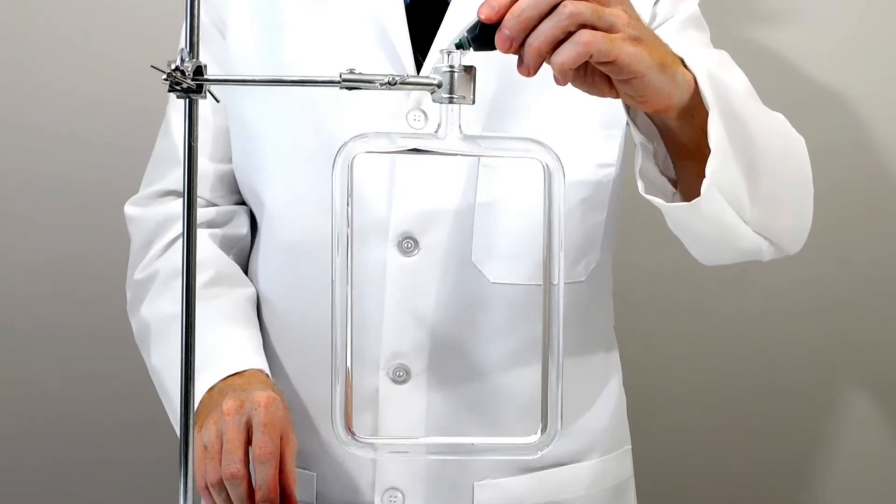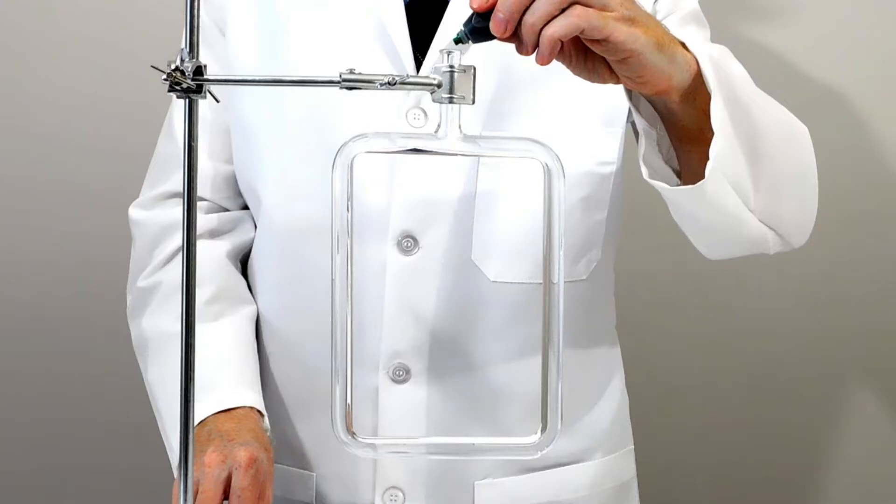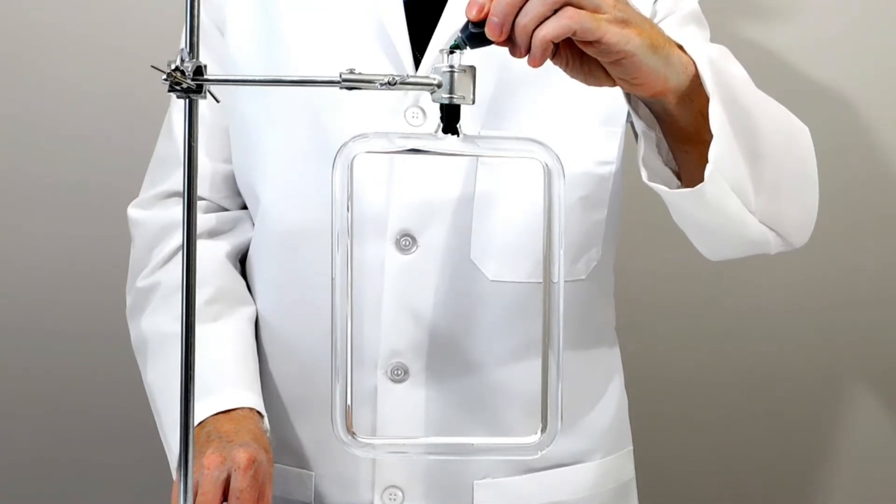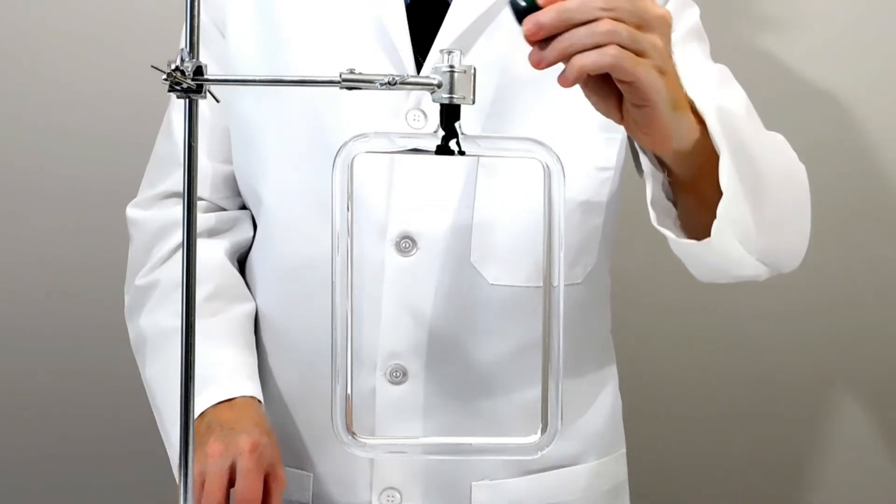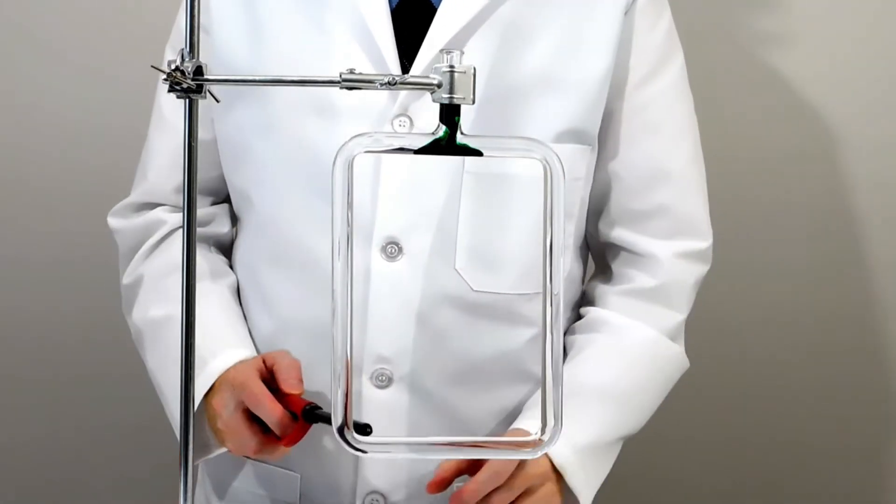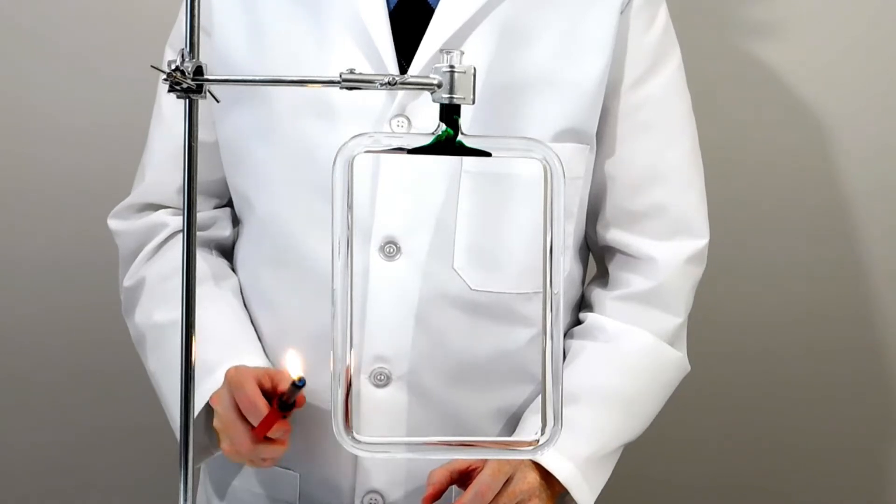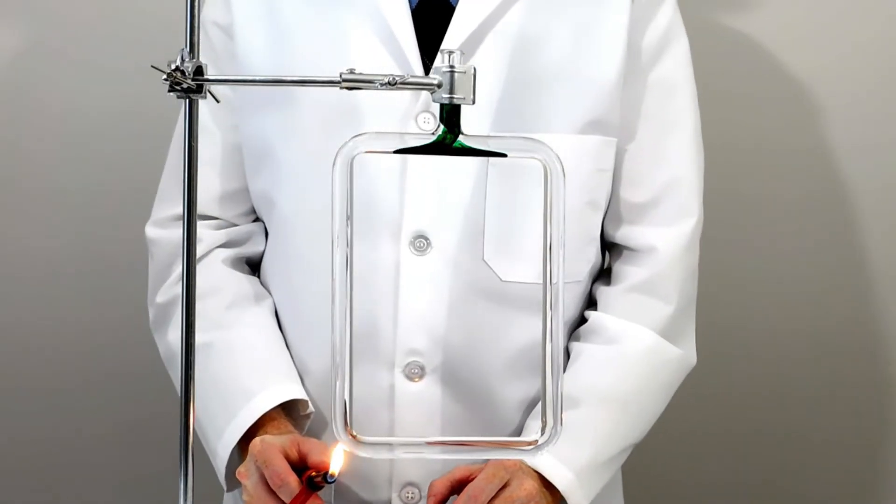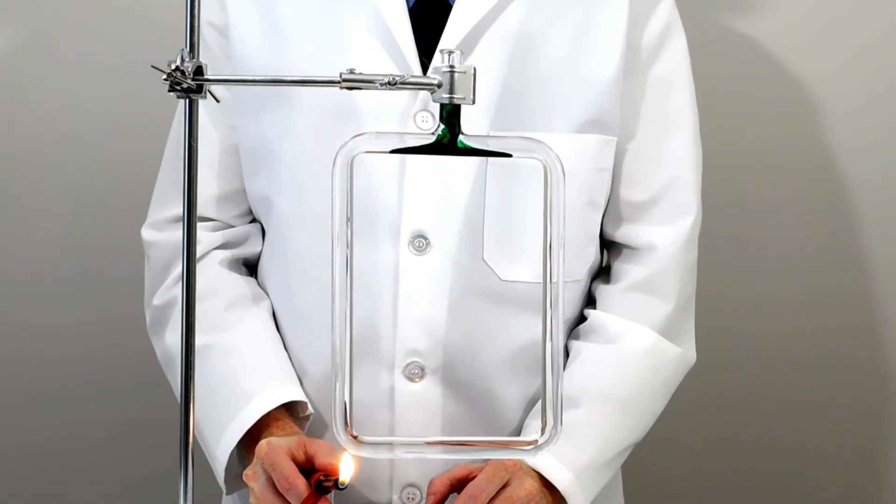Now we are ready to discuss mantle convection, which is a leading theory of what causes the tectonic plates to move. We will start by doing an experiment to understand convection currents. We fill this glass tube with water and we will put some food coloring in the top, so we can see the flow direction after we ignite a small fire. Do you think the food coloring will go clockwise, counterclockwise, or both directions?